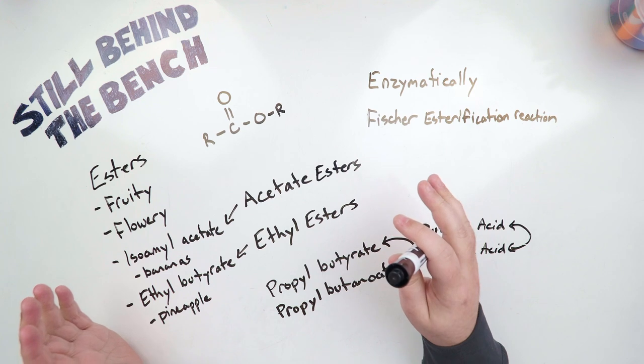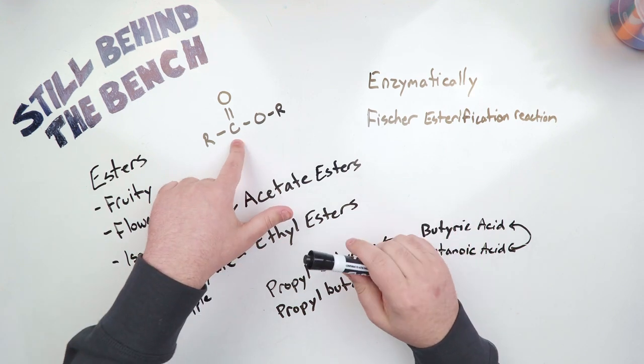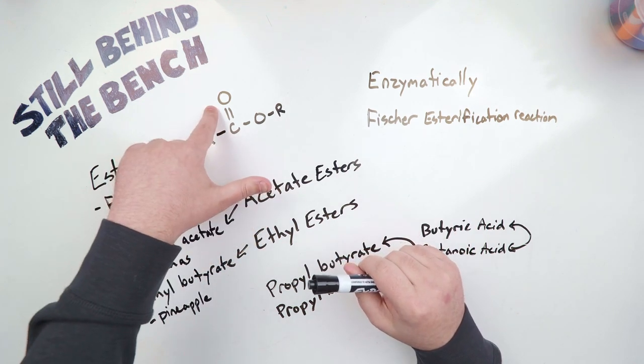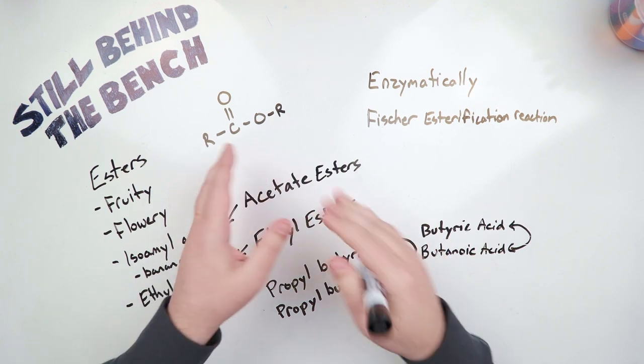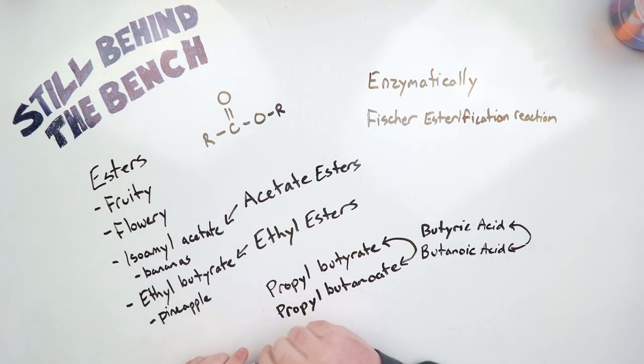So what makes an ester? Esters are pretty simple. It contains a carbon double bonded to an oxygen and single bonded to another oxygen. Then the rest of the molecule spreads out from there.